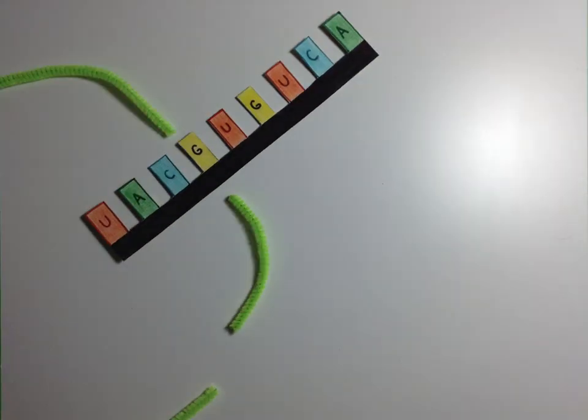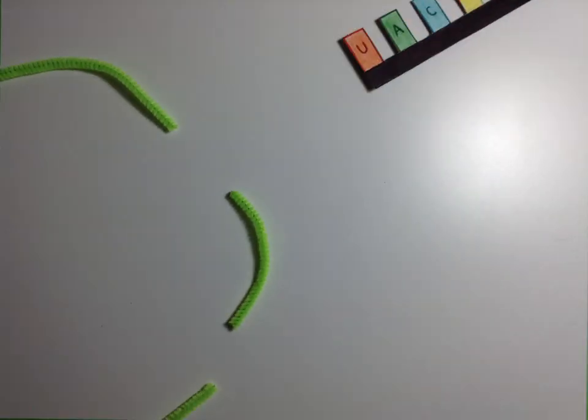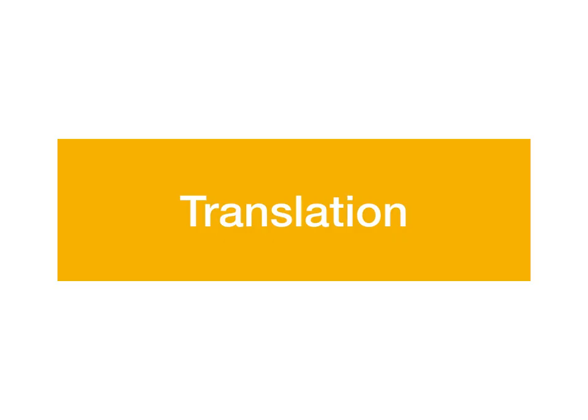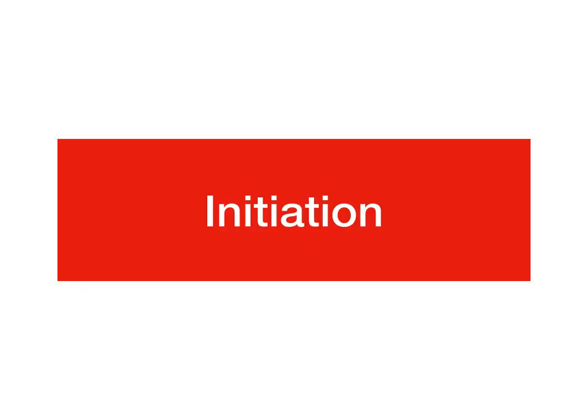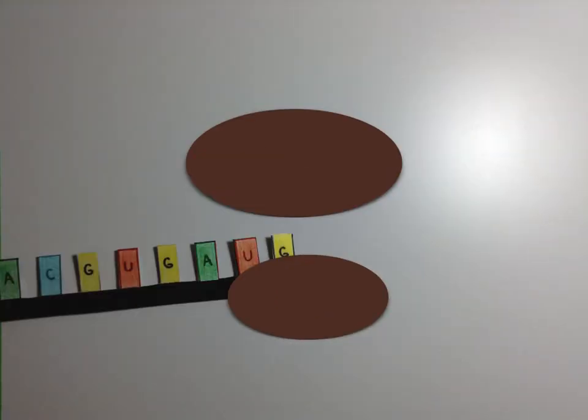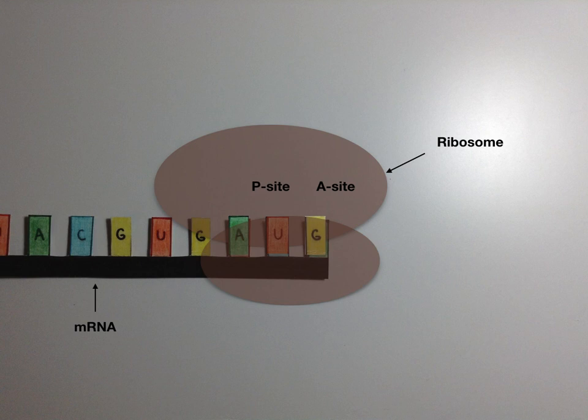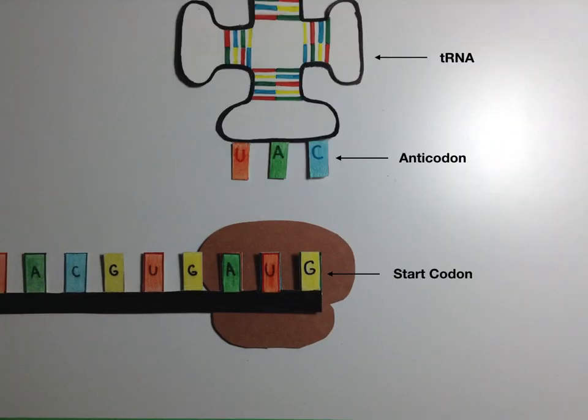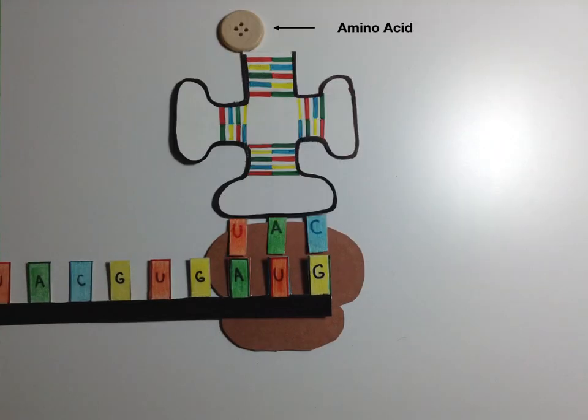The mRNA then moves out of the nucleus and into the cytoplasm. A ribosome binds to the mRNA. A tRNA molecule carries an amino acid to the ribosome and binds to the start codon of the mRNA. The tRNA has the binding site of three bases called an anticodon that is complementary to the mRNA codon.